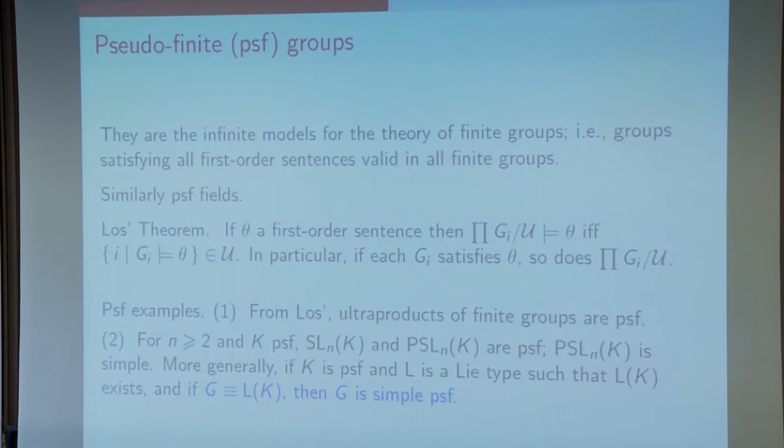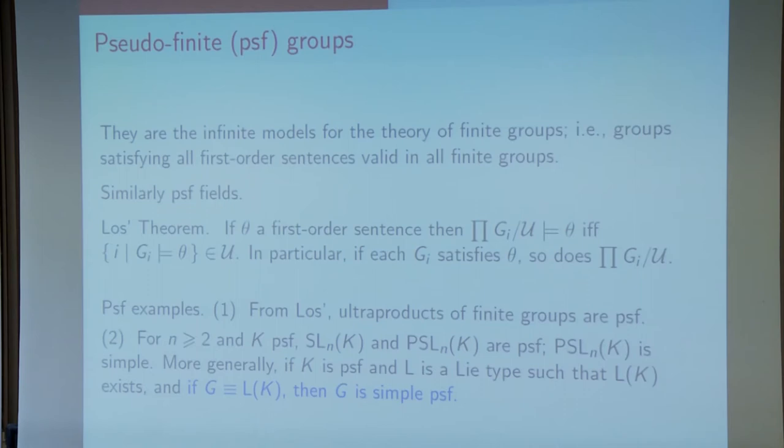So here are some examples of pseudo-finite groups. As I just said, ultraproducts of finite groups will be pseudo-finite. The second example is maybe a little more interesting. Let's look at SLN(K) where N is some integer greater than or equal to 2, and K is a pseudo-finite field. It turns out that SLN(K) is pseudo-finite and so is its central quotient. PSLN(K) is also of course a simple group.